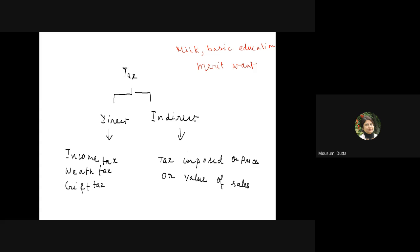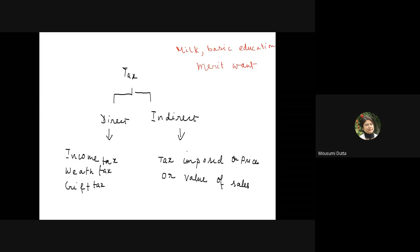We want these public goods, but we are not willing to pay for them. If the nature of a commodity is such that nobody will willingly pay for it, there will be no market for it at all. Therefore, the government needs to produce this kind of commodity. These commodities have special characteristics and will not be sold in the market.